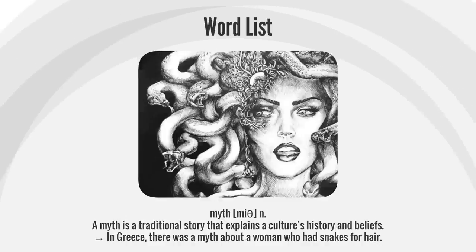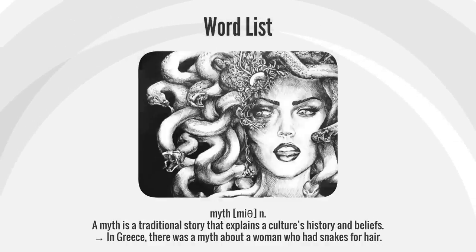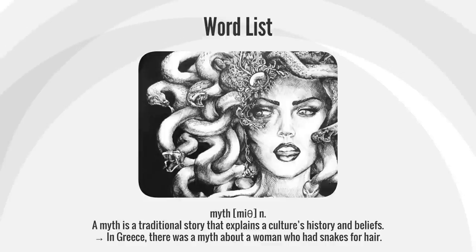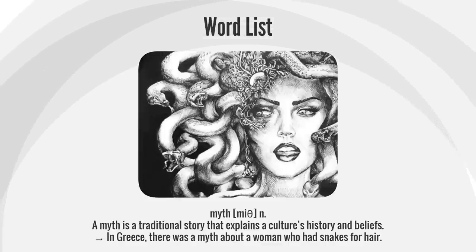Myth. A myth is a traditional story that explains a culture's history and beliefs. In Greece, there was a myth about a woman who had snakes for hair.